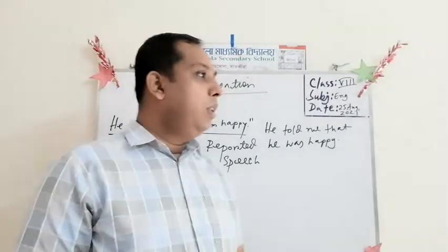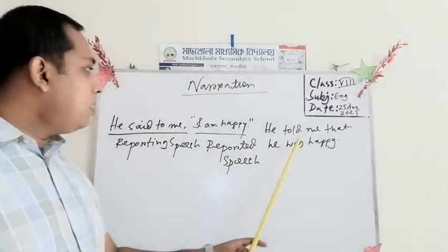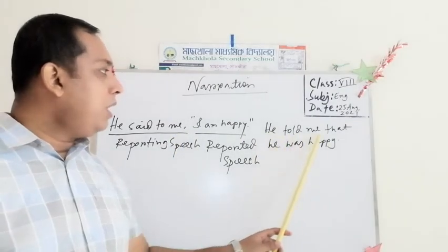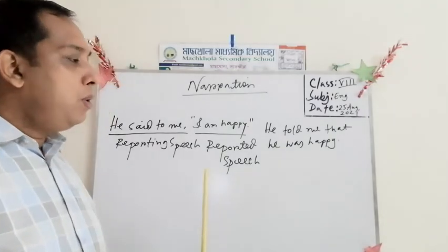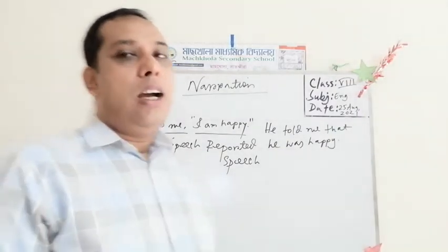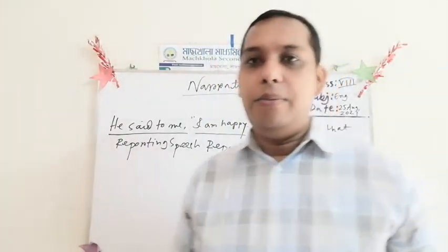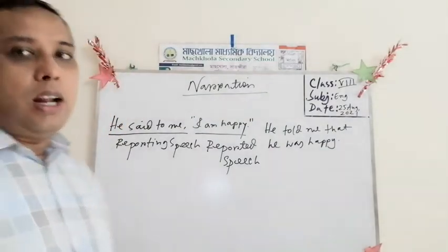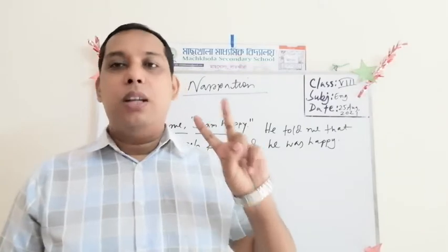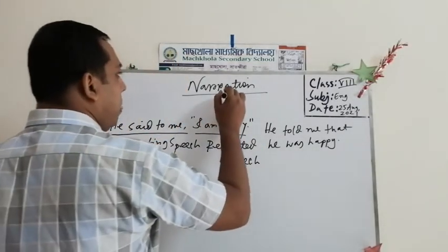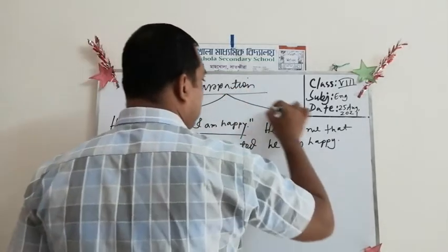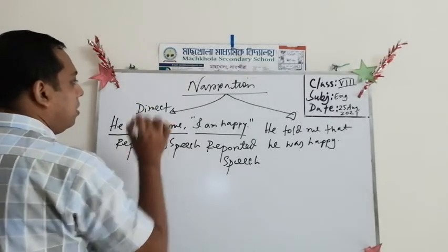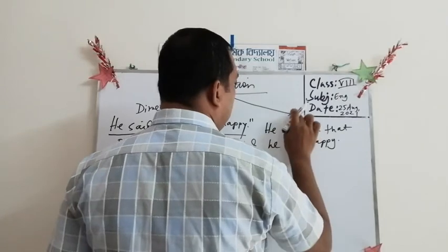So this is the answer. We can read: 'He told me that he was happy.' Can you guess how many types of narration there are? Yes, there are two types of narration. One is direct narration and another is indirect narration.